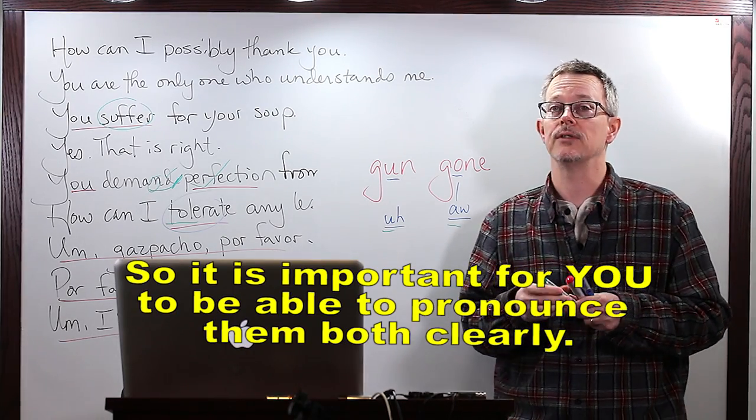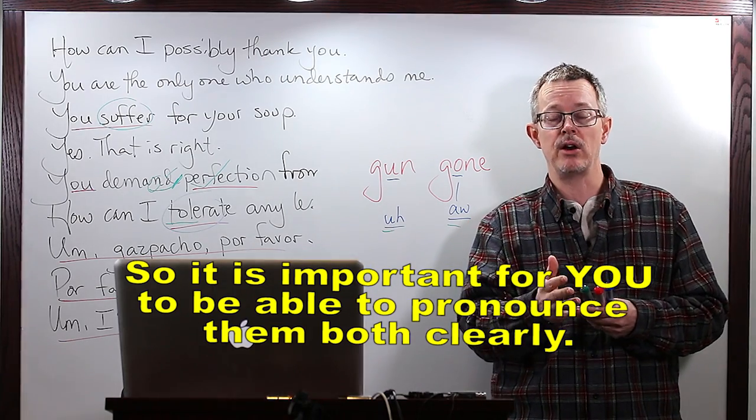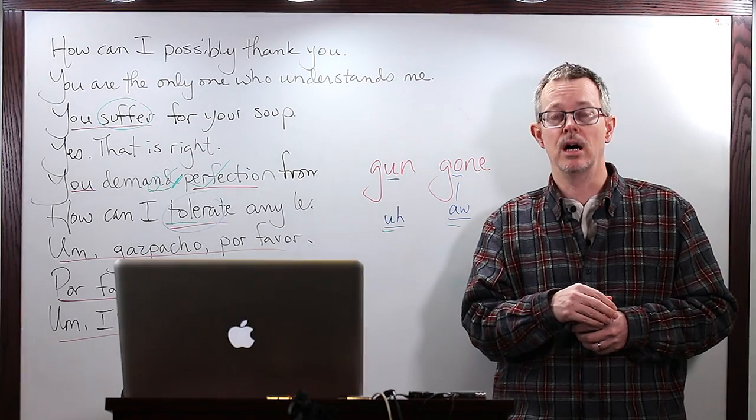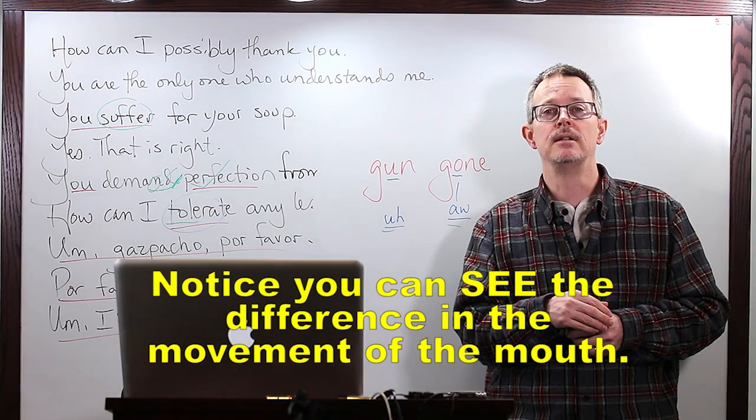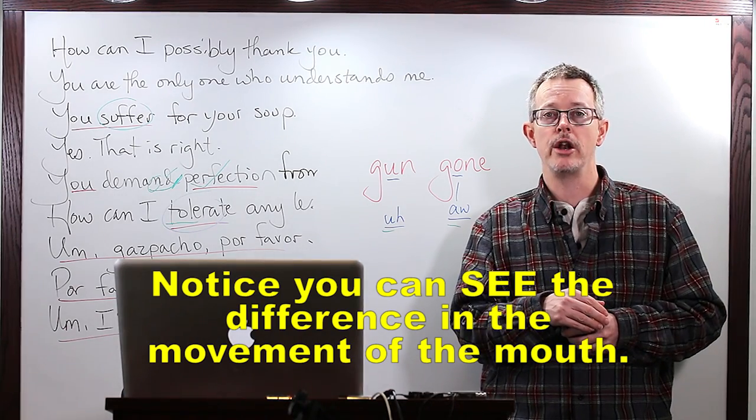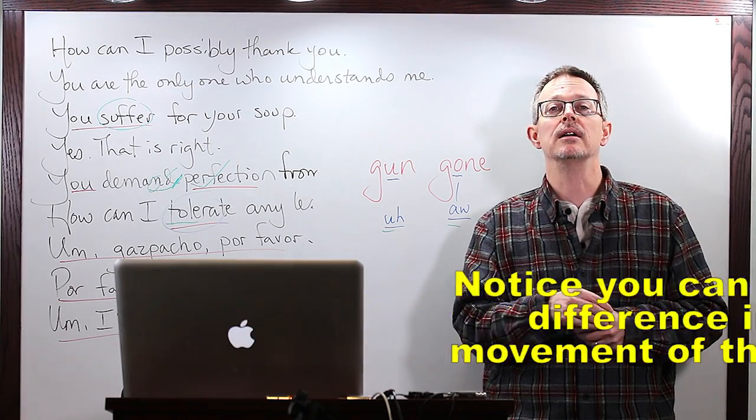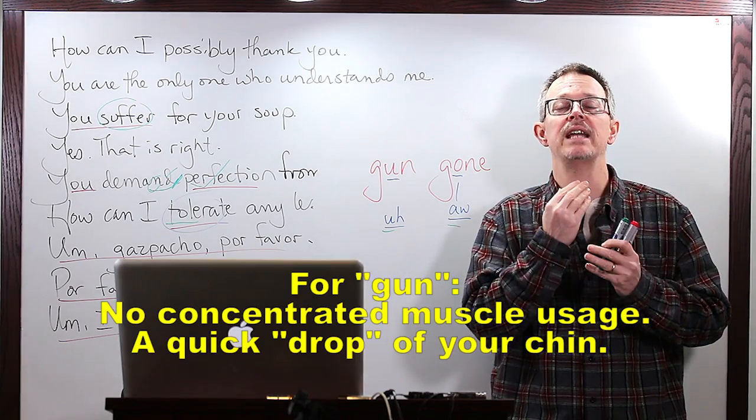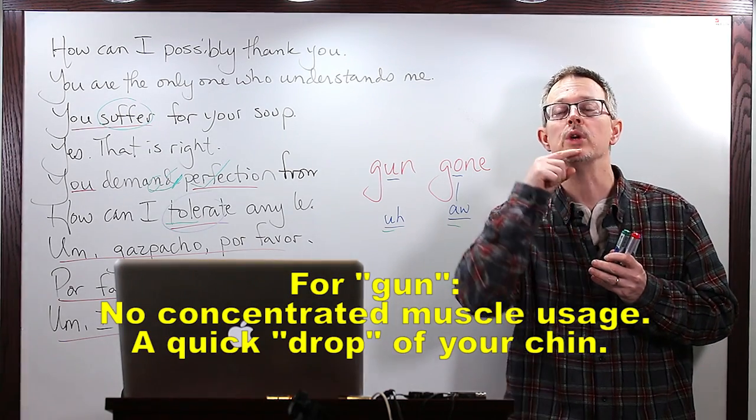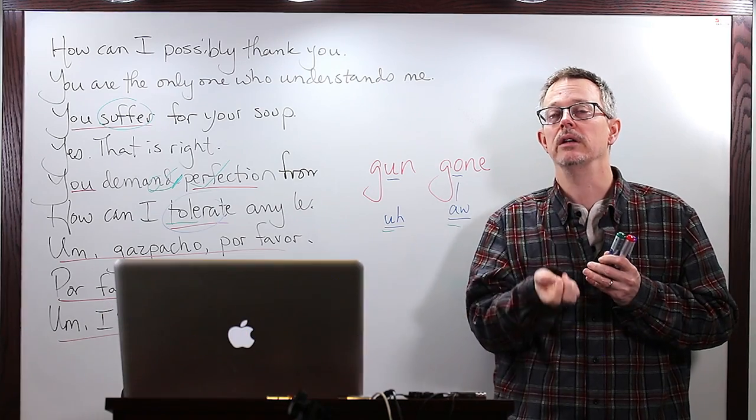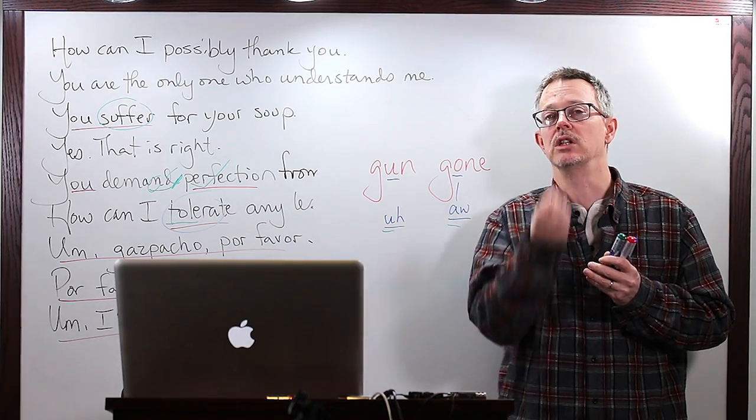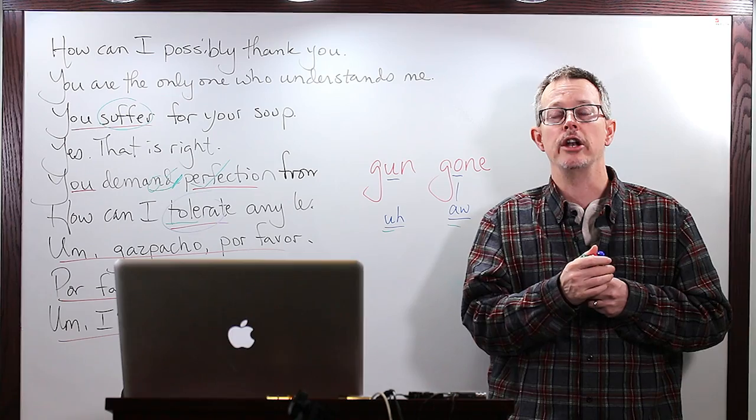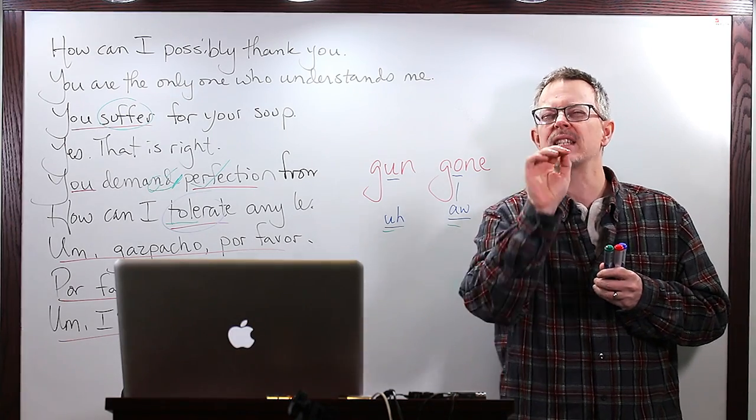Now to the American, these sounds are very different. The uh and the aw are very different. So I want you to compare and practice: gun, gone, gun, gun, gun, gun, gun. The short U is a very simple sound. We're not using really any muscles. We open up, we drop a little. Gun, gun, gun. The sound just kind of falls out.